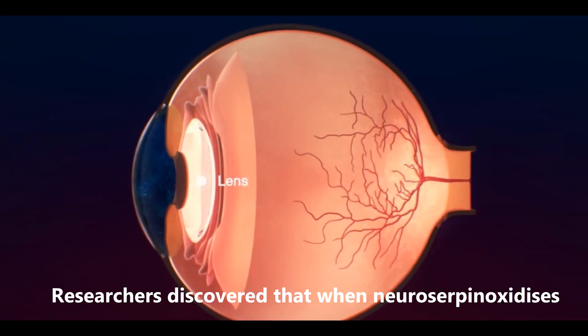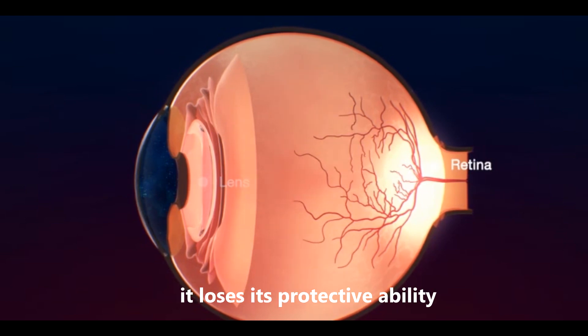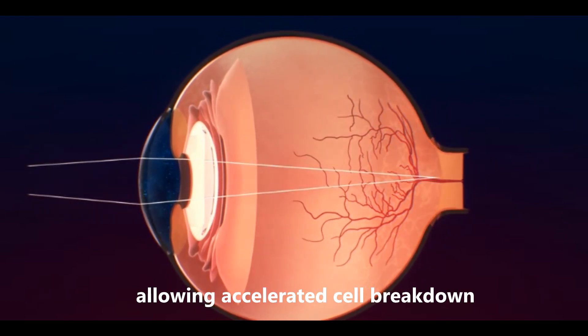Researchers discovered that when neurosurpin oxidizes, it loses its protective ability, allowing accelerated cell breakdown.